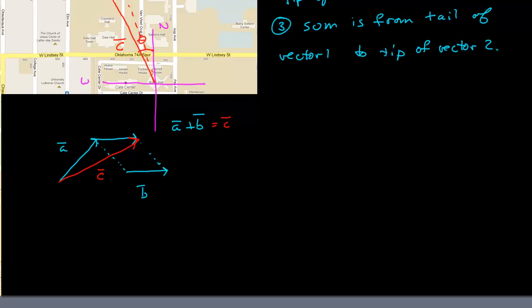Let's look at an example of vectors along a line. If I had A that pointed that way and a B that pointed that way, we do the same thing. We have our first vector. Then we take the tail of vector 2 to the tip of vector A by translating it. Then the resulting vector goes from the tail of the first one to the tip of the second one, and that is vector C.